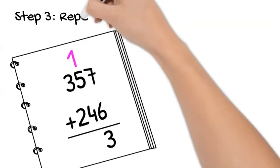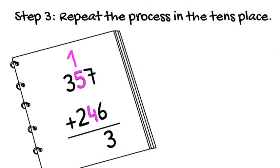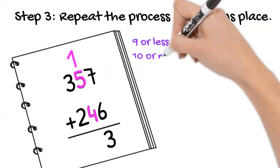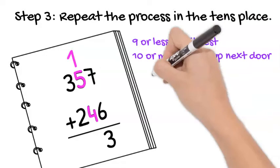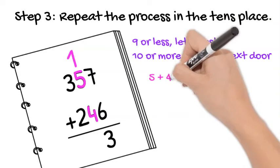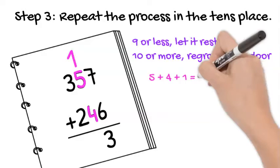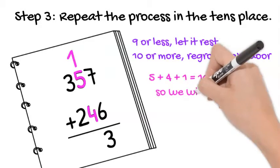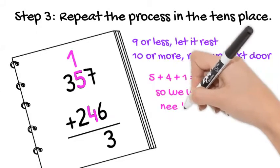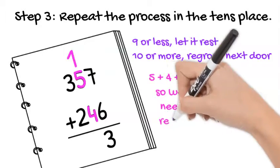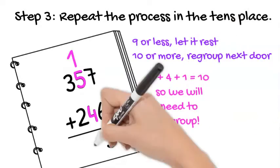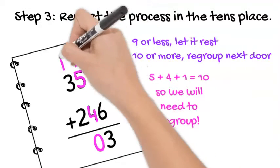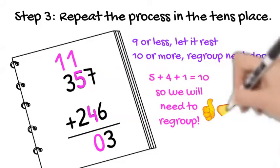Step three, repeat the process in the tens place. So once again we have to ask, nine or less, let it rest, ten or more, regroup next door. This time we have five plus four in the tens place plus that one we regrouped in the other step. Five plus four plus one is ten. Ten or more, regroup next door. A ten is made of just one ten. So we put a zero in the tens place and we regroup that one next door into the hundreds place.